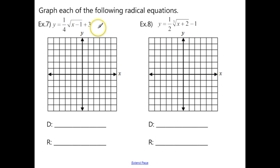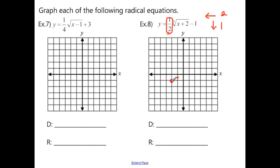In this next set we work with compression. For Example 8 with the cube root: shift left 2 and down 1, then compress by a factor of one-half. Move the origin left 2 down 1. Instead of going over 1 up 1, go over 1 up one-half; instead of over 1 down 1, go over 1 down one-half. Sketch the graph with arrows. Domain and range are both negative infinity to positive infinity.